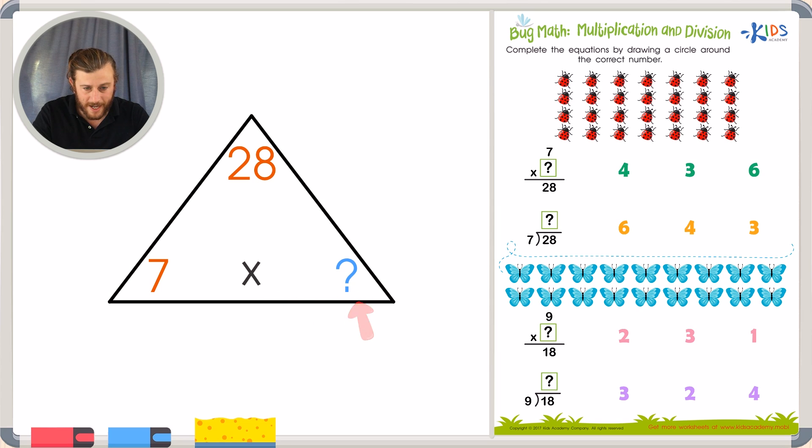7 times something equals 28. 28 divided by 7 equals what? These are all things that we're going to figure out today by using counting and relating multiplication and division. Let's get started.